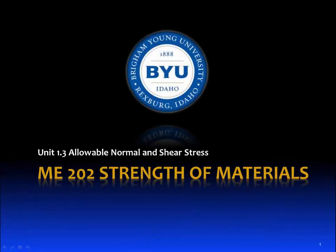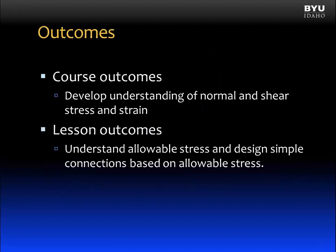Unit 1.3: Allowable Normal and Shear Stress. The course outcome we're working on is to develop an understanding of normal and shear stress and strain. The lesson outcome is to understand allowable stress and design simple connections based on allowable stress.